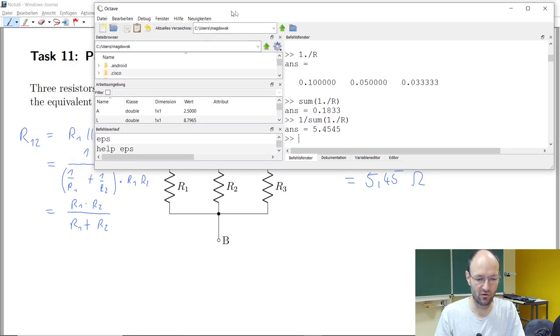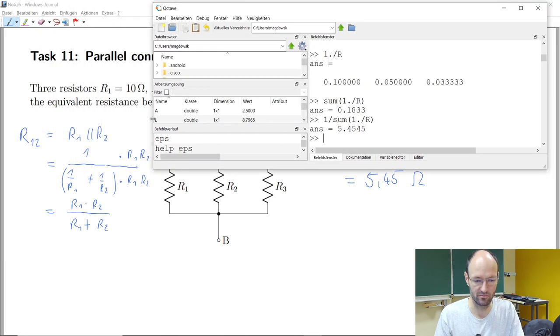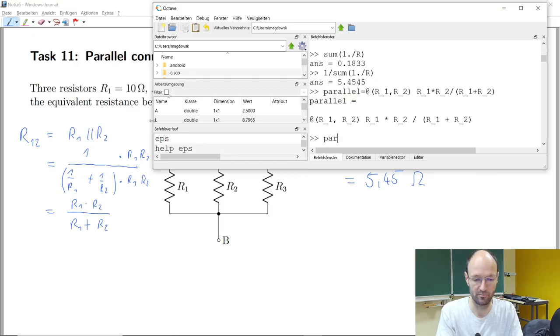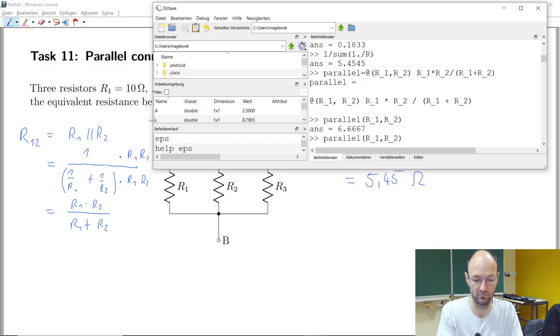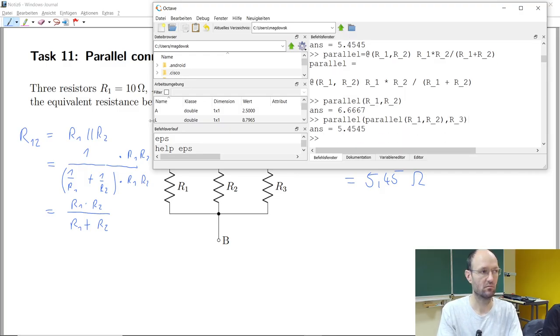But we could also do it in this way. And for this formula, I usually like to write some function in octave. So you could also write simple functions here and say, if you have a function that is called parallel and this one has two inputs, namely R1 and R2, the parallel circuit of the two resistors will be this formula that we just derived. And so we could say, okay, the parallel connection of R1 and R2 now really calculated with the values would be this. And if I take this one parallel to R3, I get the very same value at the end, what should also happen. So this would be another way to calculate this.